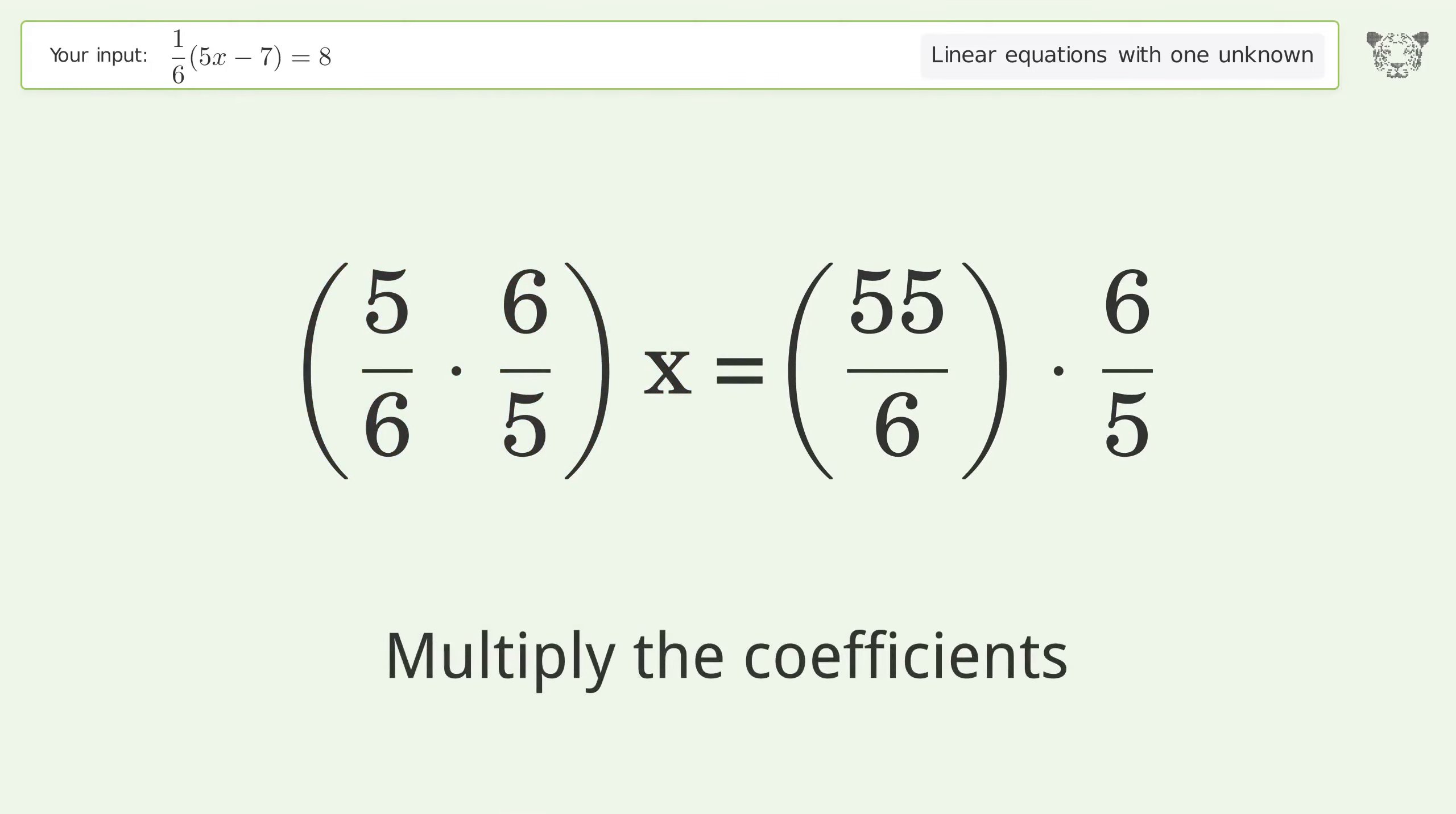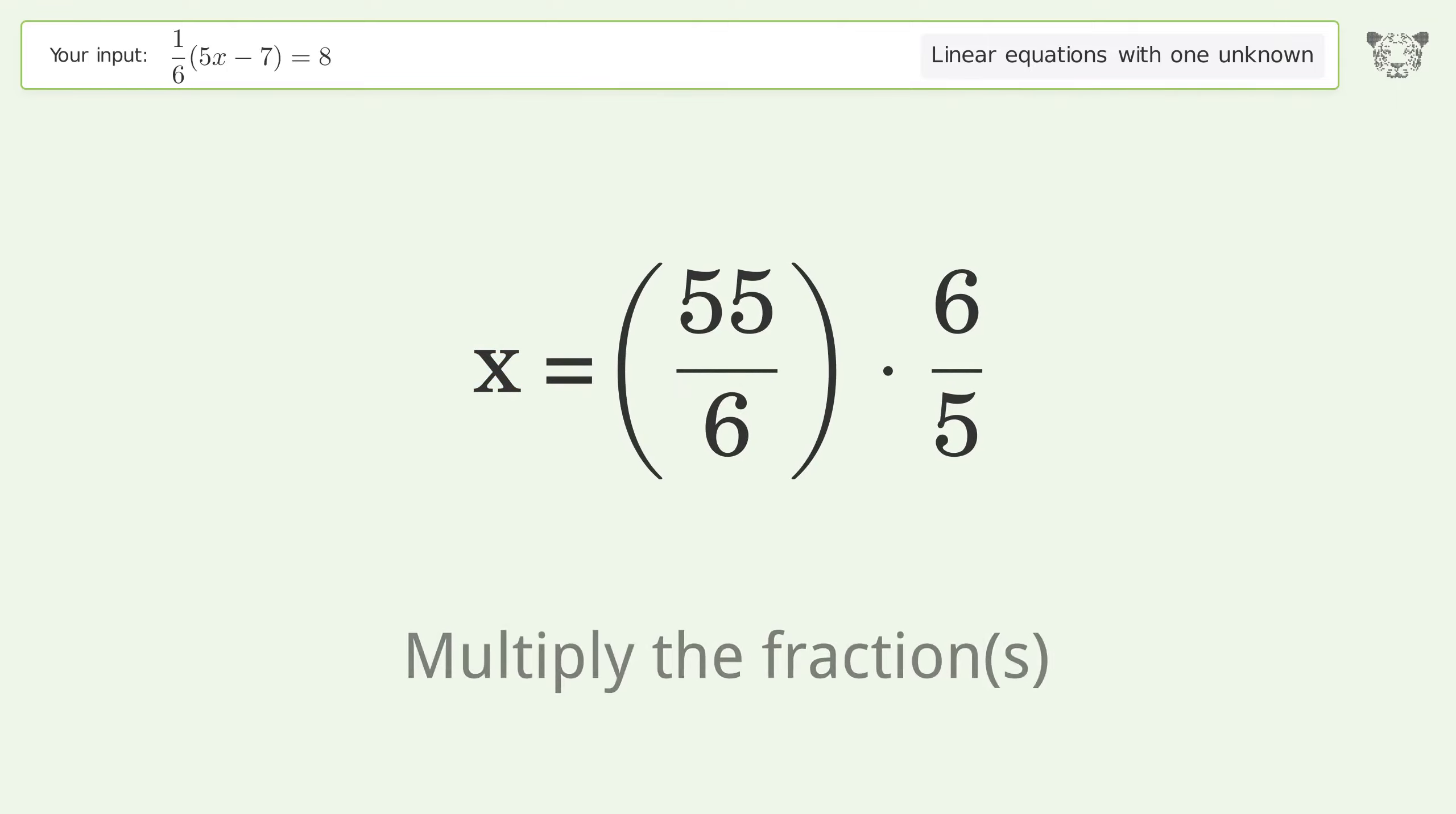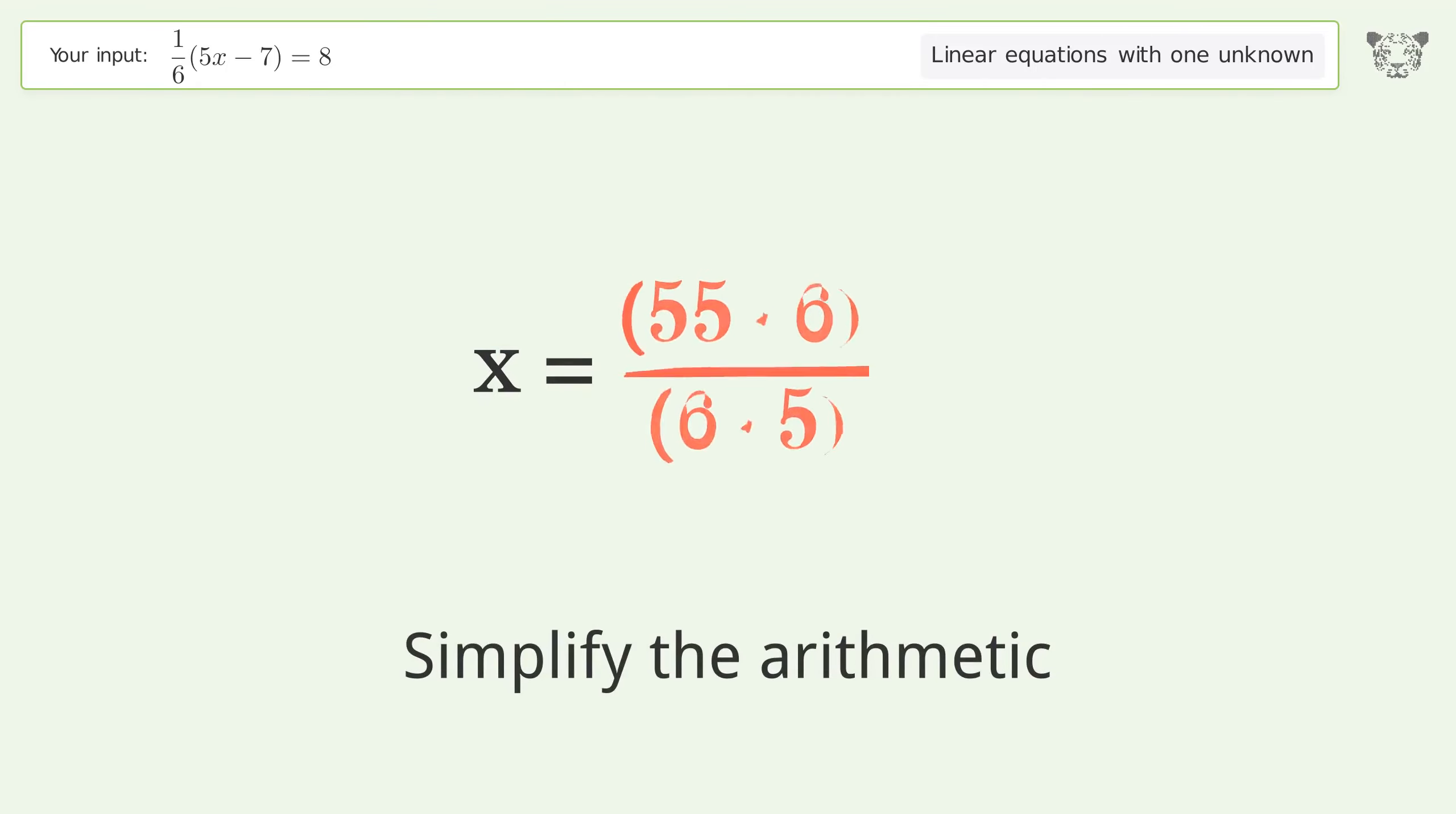Multiply the coefficients. Simplify the fraction. Multiply the fractions. Simplify the arithmetic. And so the final result is x equals 11.